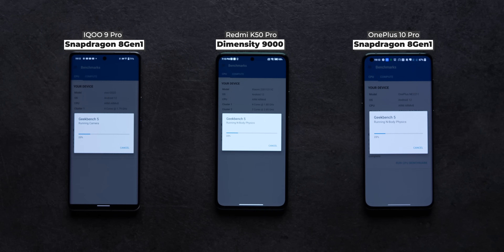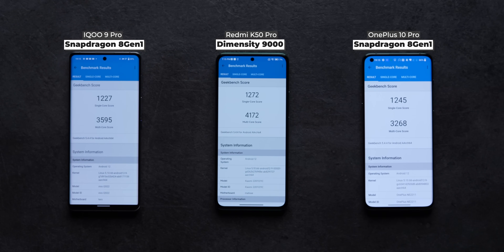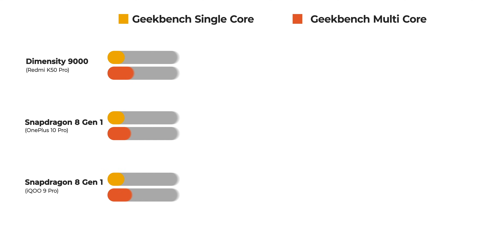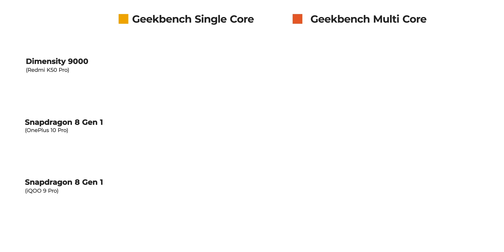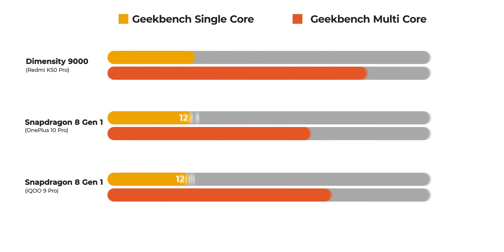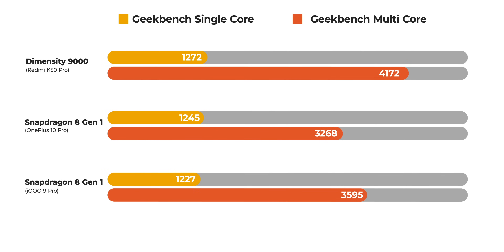What really matters is that games run smoothly on these phones without throttling too much and without the phones getting too hot. We ran Geekbench next, and for the very first time on an Android phone in our tests, the score actually crossed the 4,000 mark in the multi-core test with the Dimensity 9000 inside the Redmi K50 Pro. So in multi-core performance, the Dimensity 9000 is better than the Snapdragon 8 Gen 1. However, when it comes to single-core performance, it is nearly identical on all three phones.